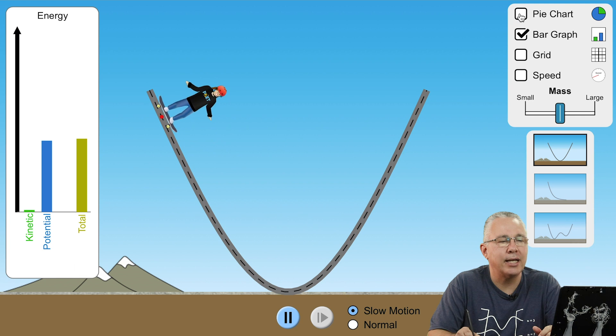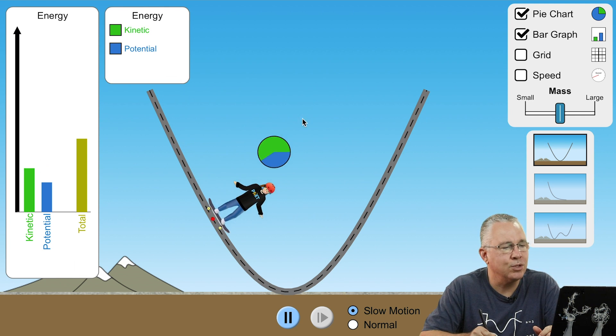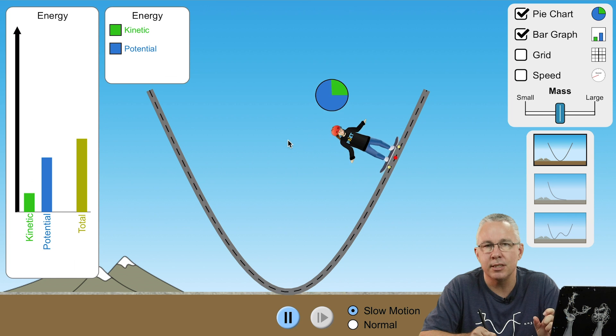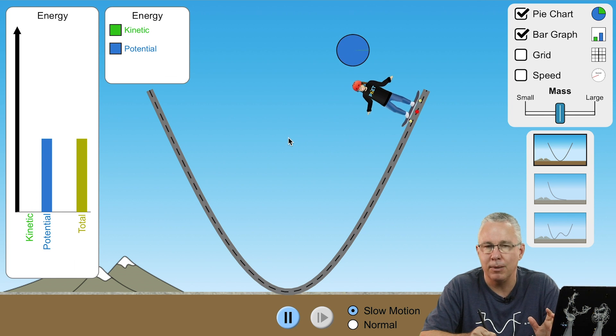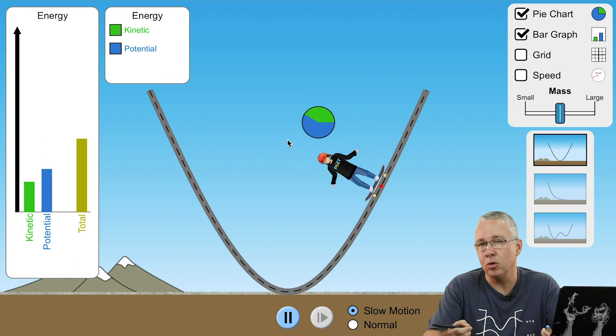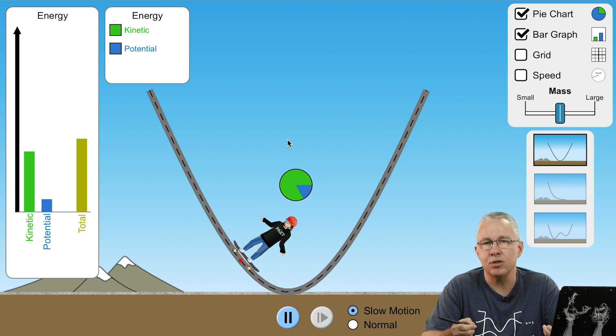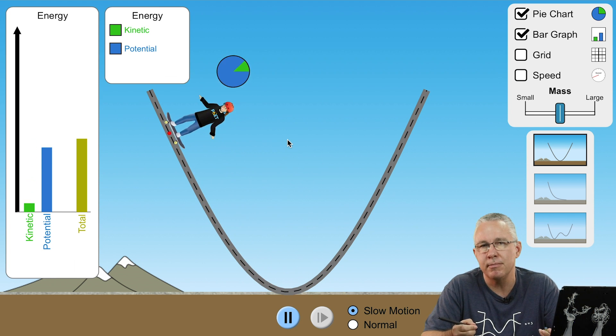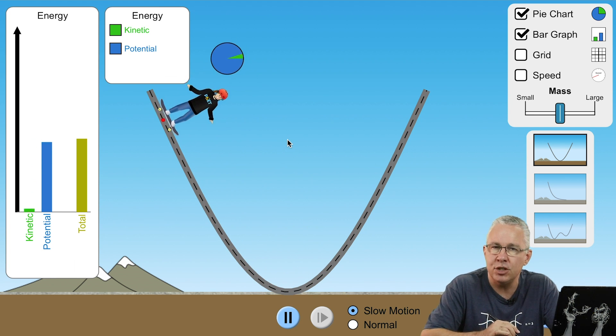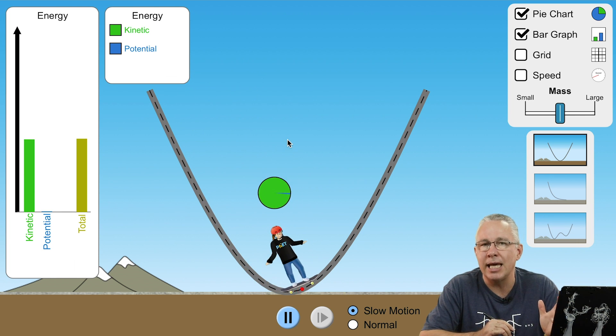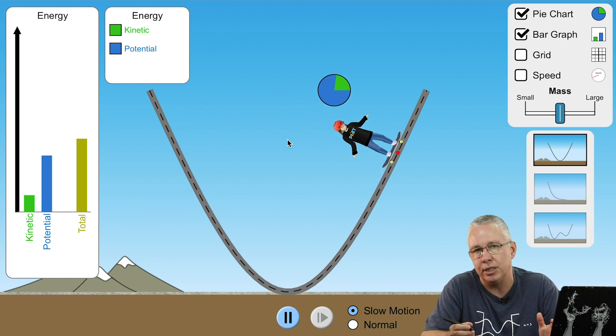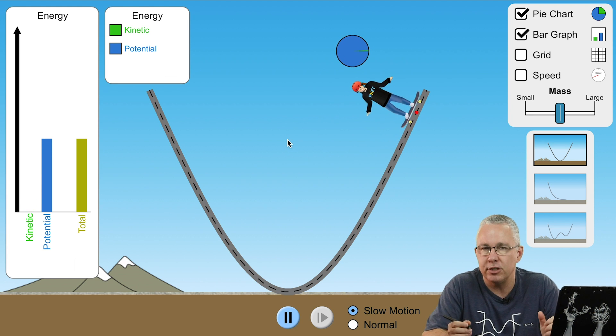Can you see that the total energy doesn't change? If I now add a pie chart it'll also help you understand that the total energy is the sum total of the potential plus the kinetic. And that is the law of conservation of energy: that the total energy in a system remains unchanged. We have energy transferred, energy transformed, but you neither gain energy or lose energy. And that's the law of conservation of energy.